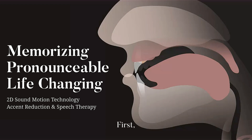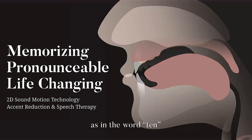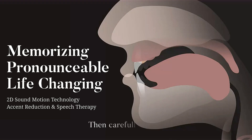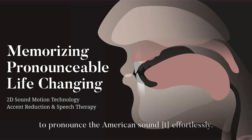First, take a moment to consider how you pronounce the sound t, as in the word tin, in your native language. Then, carefully follow the 2D Sound Motion Simulator and you will soon be able to pronounce the American sound t effortlessly.